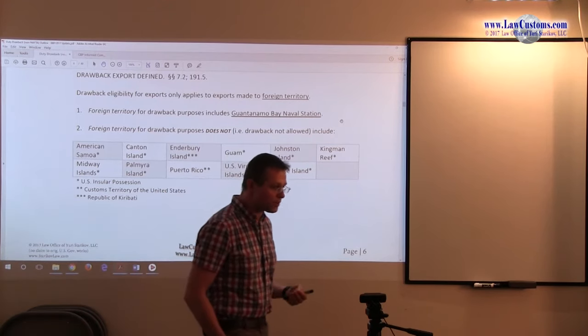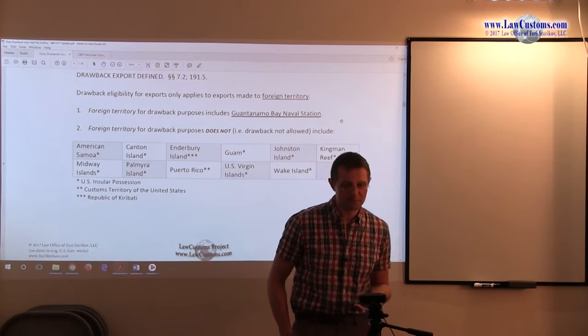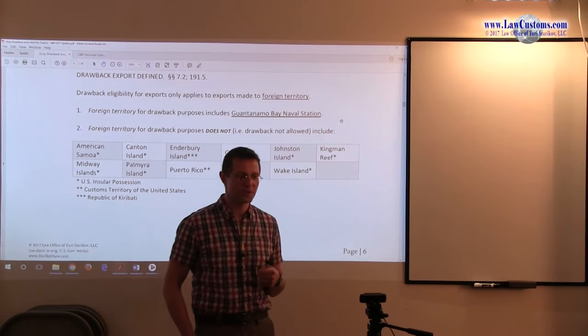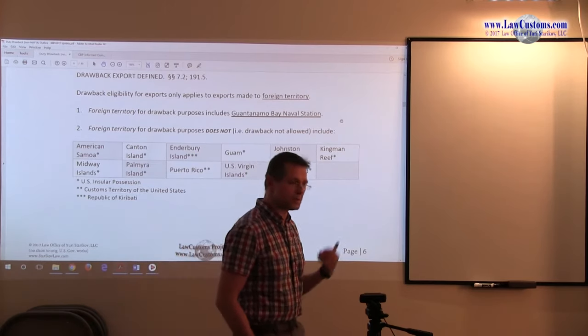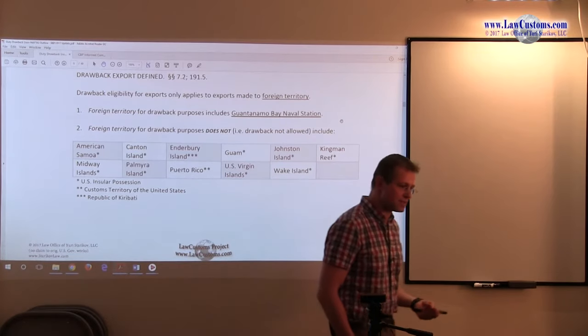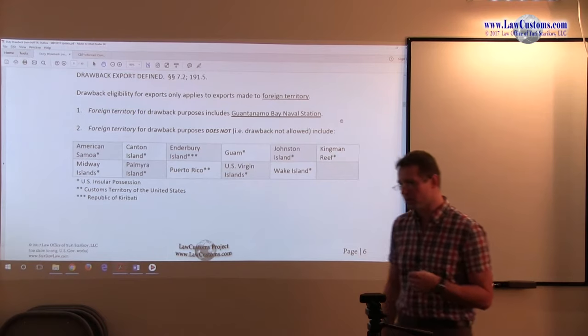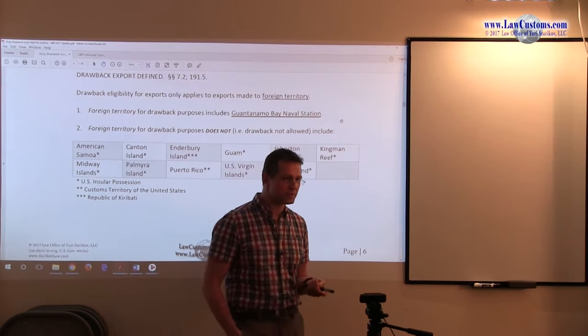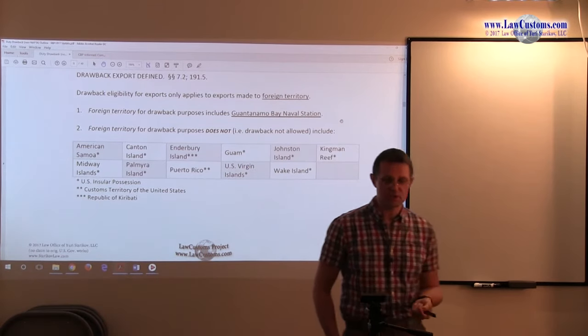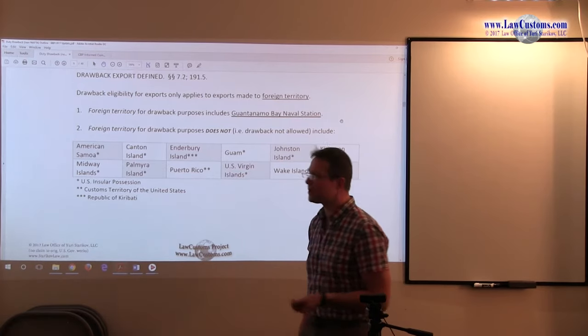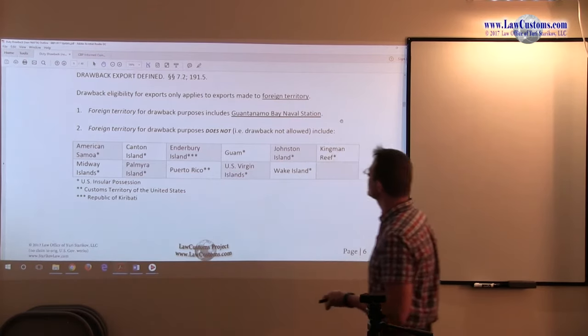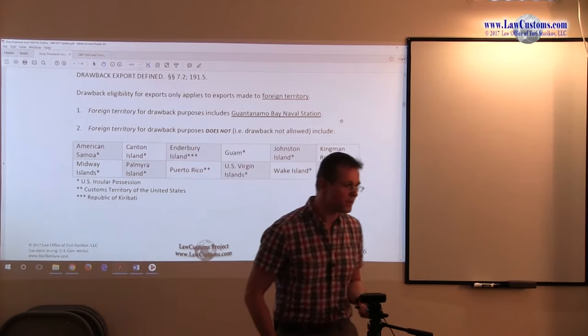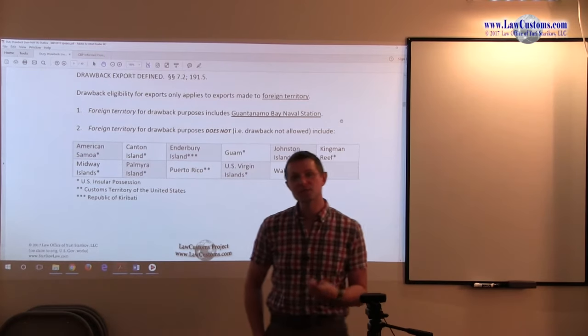Throughout our preparation and discussion of the customs broker exam, we discussed the concept of customs territory of the United States. If the product comes into the customs territory of the United States, US Customs and Border Protection claims its jurisdiction over it, so all the customs laws apply. Customs territory includes Puerto Rico, 50 states of the Union, and District of Columbia. Here we have the specialty carve-out definition for the purposes of drawback because it has to do with an export.